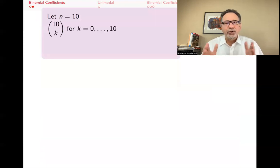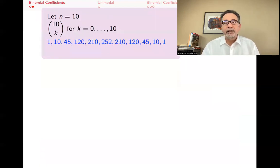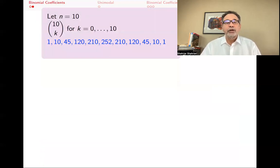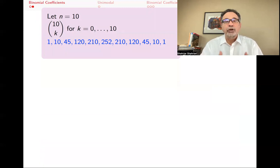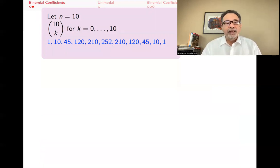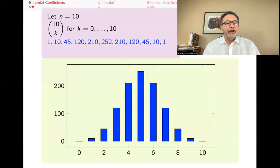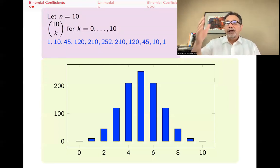For n equals 10, let's look at this a bit more. The values of 10 choose k are: 1, 10, 45, 120, 210, 252, 210 — those are 10 choose 0, 10 choose 1, 10 choose 2, and so forth. They are unimodal. If I graph these as a bar chart, you can see the unimodality clearly.